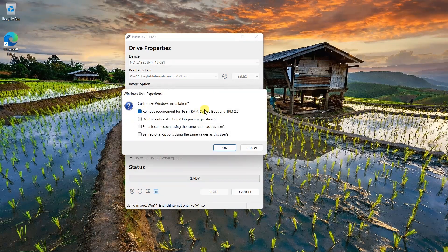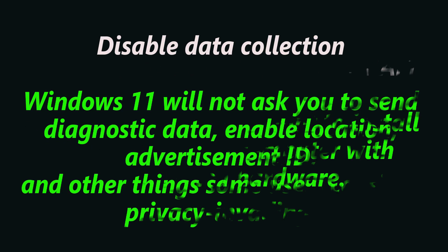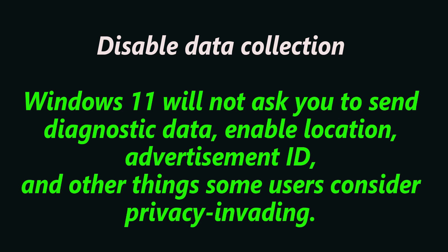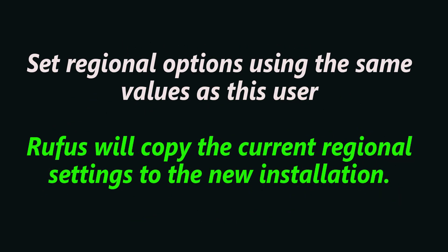As you click on start, Rufus will offer you to customize the installation with the following options. Place check marks next to the ones you need. First option: remove requirement for 4GB+ RAM — tick this if you want to install Windows 11 on a computer with unsupported hardware. Second option: disable data collection — Windows 11 will not ask you to send diagnostic data, enable location, advertisement ID, and other things some users consider privacy invading. Third option: set a local account — select this to skip the Microsoft account requirement during initial setup. Fourth option: set regional options using the same values as this user — Rufus will copy the current regional settings to the new installation.